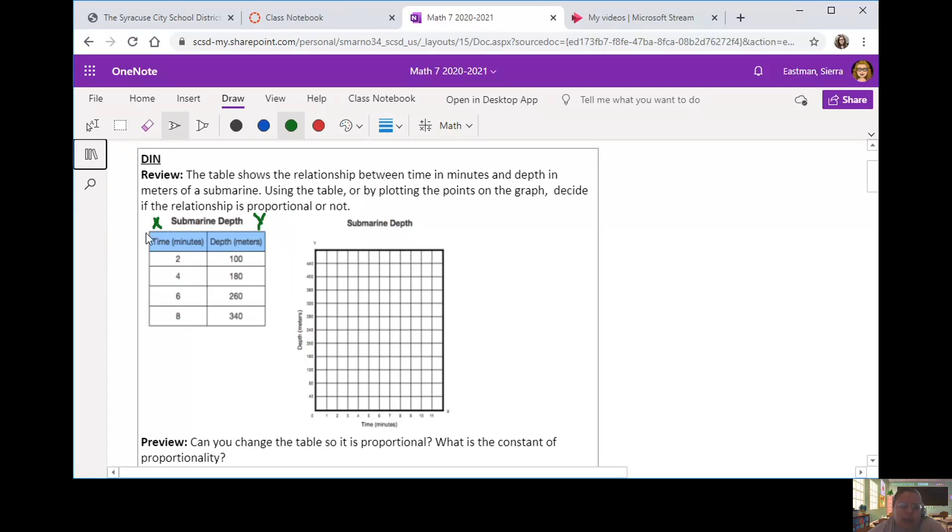Y divided by X, right? Remember that constant of proportionality should always be Y divided by X. And the only way that we're going to see if this is proportional is if all four of these are equal. So 100 divided by 2, that gives me 50.